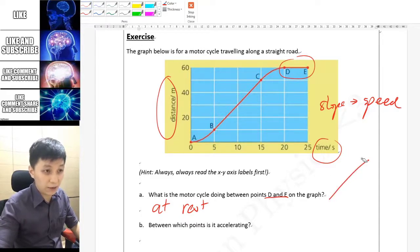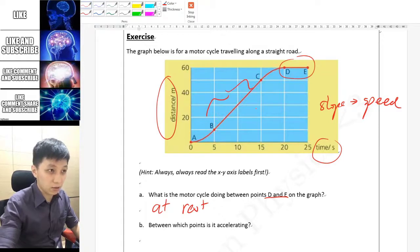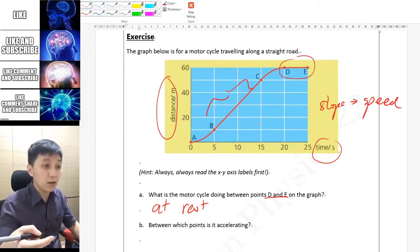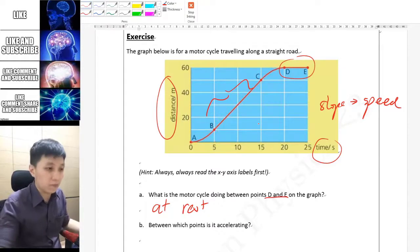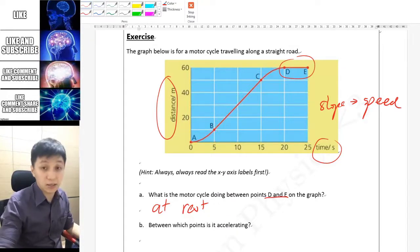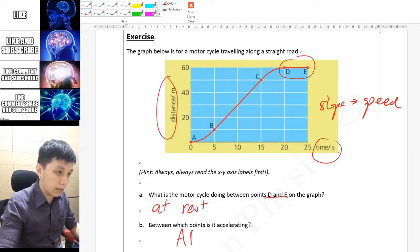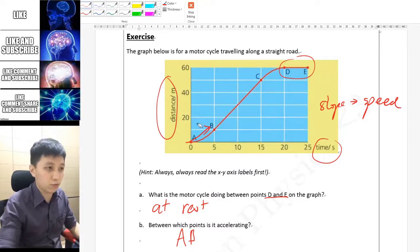If you look at B and C, the slope doesn't change, that means it has a non-zero speed but it is not changing. When you say accelerating, that means the slope has to be getting steeper and steeper, so that will be A to B.